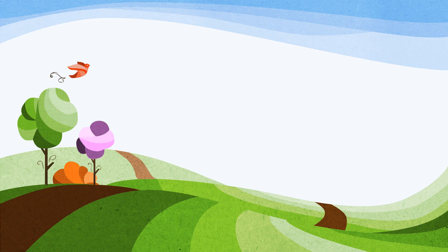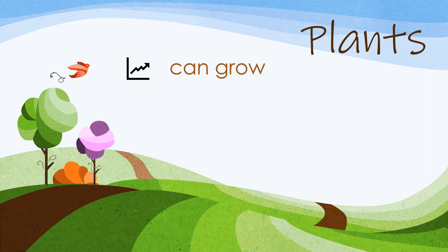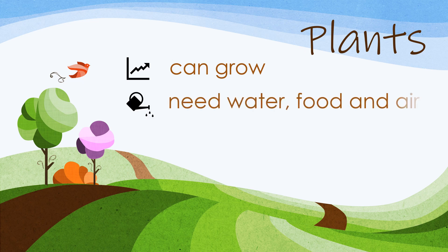First, we will learn about plants. Plants can grow from a small seed into a big tree. Plants need water, food, and air to grow and live. Plants will get water through the roots. Plants need sunlight and air, specifically carbon dioxide, to make their food.